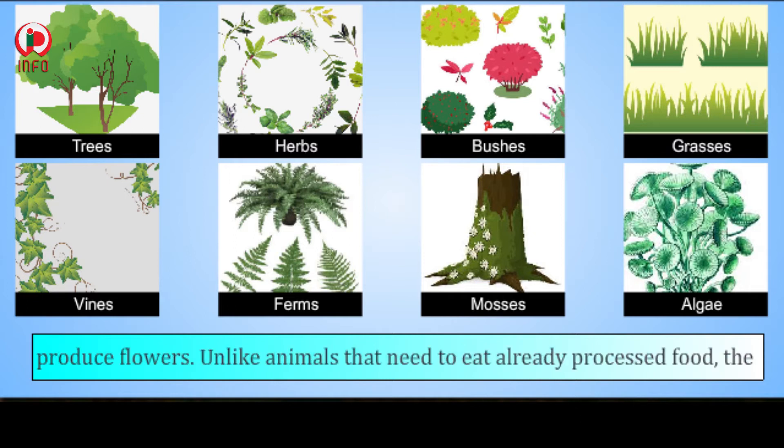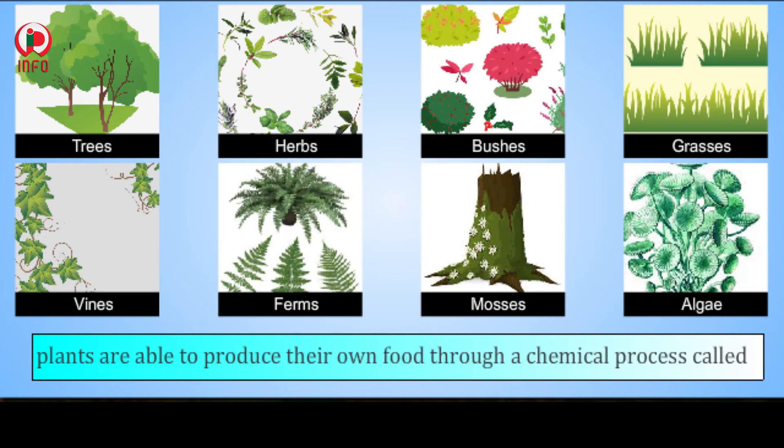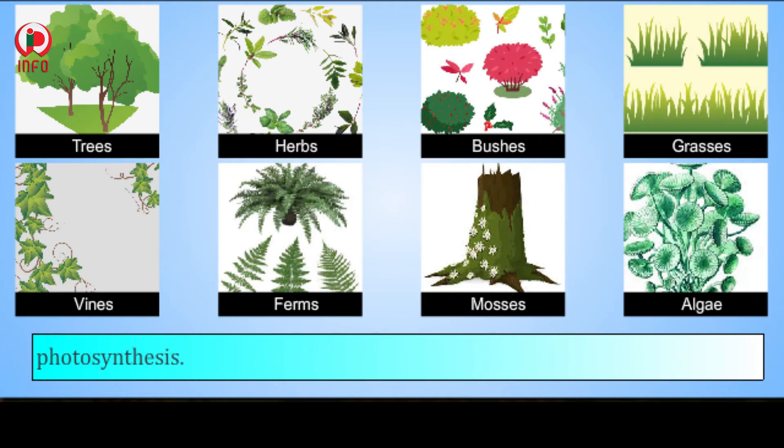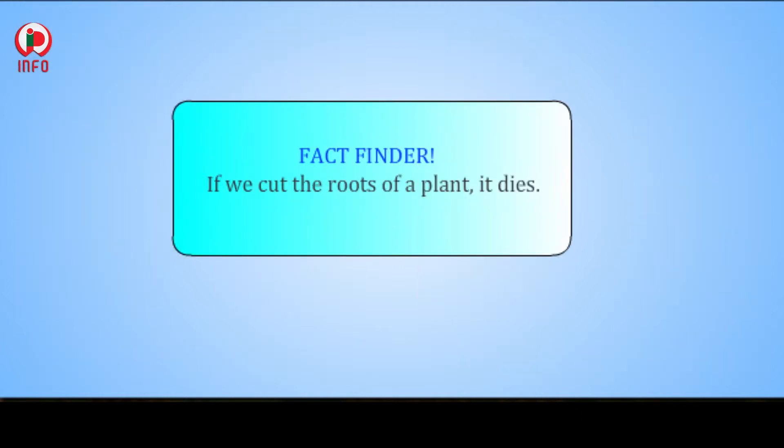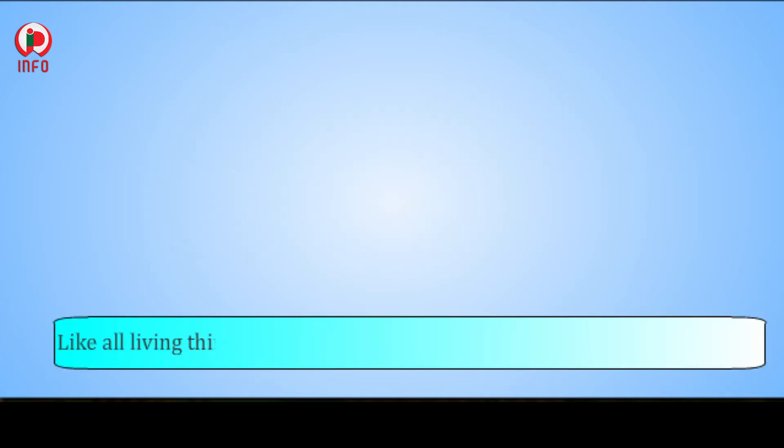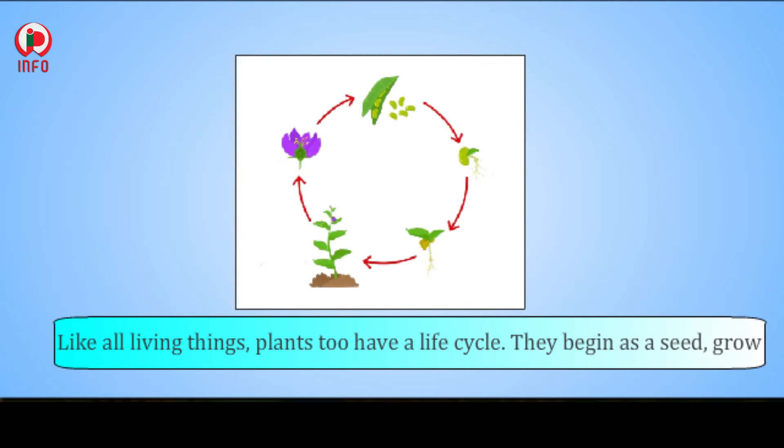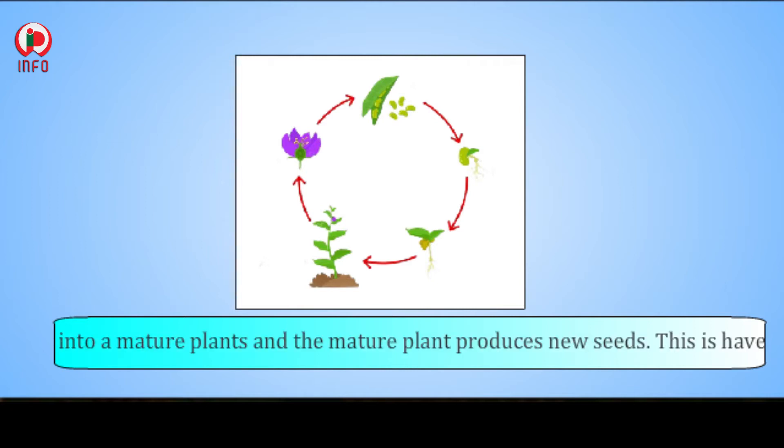Unlike animals that need to eat already processed food, plants are able to produce their own food through a chemical process called photosynthesis. Fact finder: If we cut the roots of a plant, it dies.